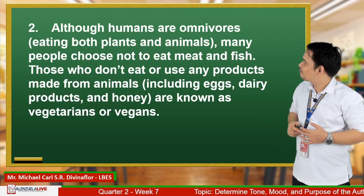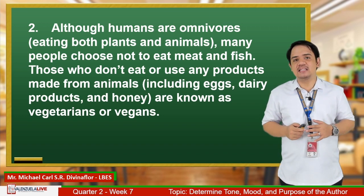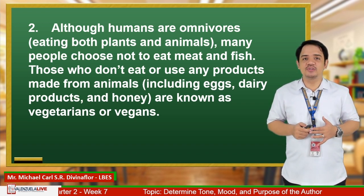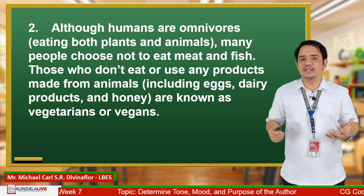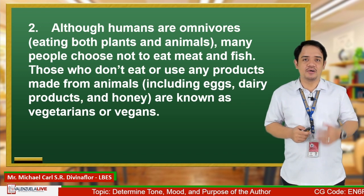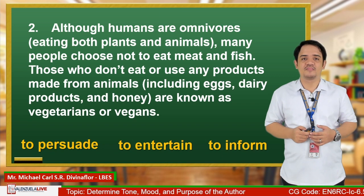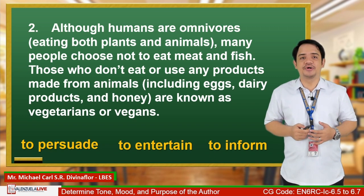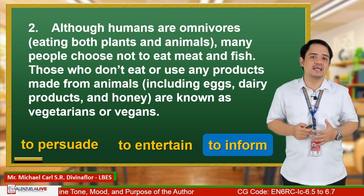Number 2: 'Although humans are omnivores — meaning eating both plants and animals — many people choose not to eat meat and fish. Those who don't eat or use any products made from animals, including eggs, dairy products, and honey, are known as vegetarians or vegans.' The correct answer is I — to inform. The author aims to inform you about human beings who are vegetarians and what they are.